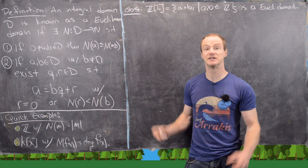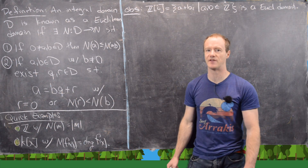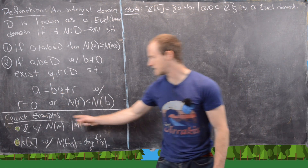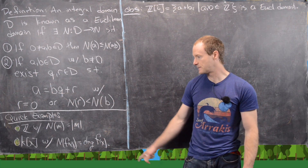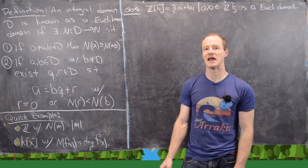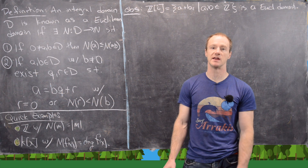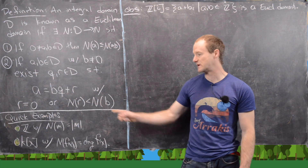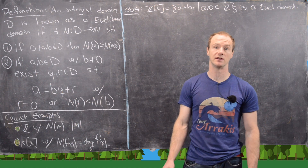We've seen this kind of division algorithm in other rings already, and this is just an abstraction of that notion. Two quick examples we've already seen: one is the integers, where the norm is given by the absolute value function. Another is polynomials over a field — let K be any field, we look at K[x], and the norm is given by the degree.